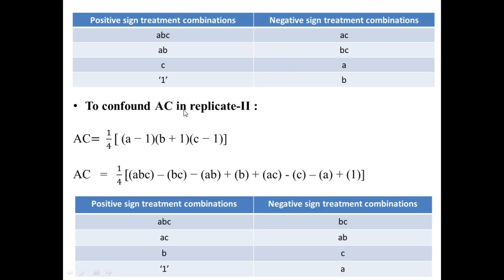In the second replicate we confound the interaction effect AC. The formula for AC is (1/4)(A−1)(B+1)(C−1), which expands to (1/4)[ABC − BC − AB + B + AC − C − A + 1]. The positive treatment combinations are ABC, AC, B, and 1, and the negative sign treatments are BC, AB, C, and A.